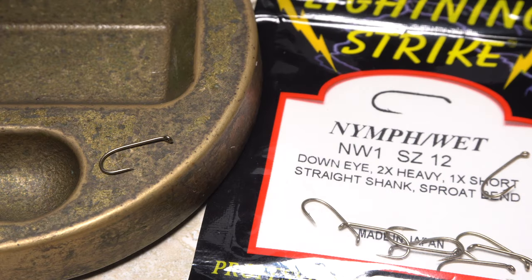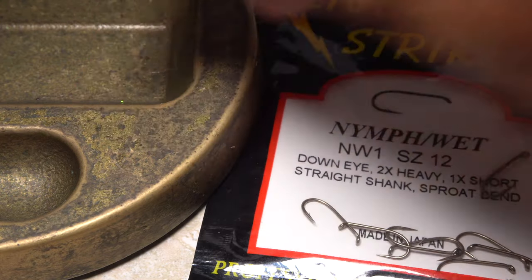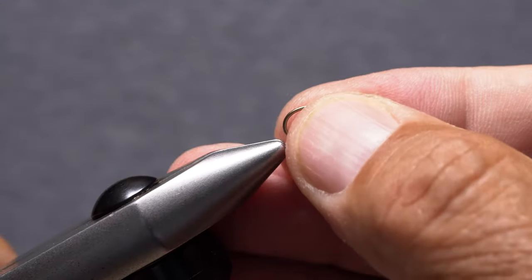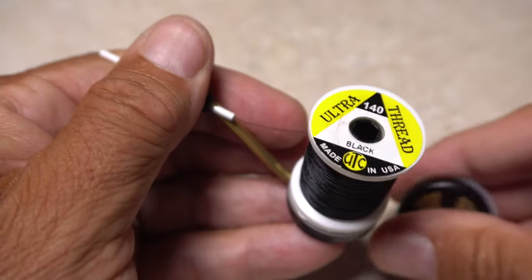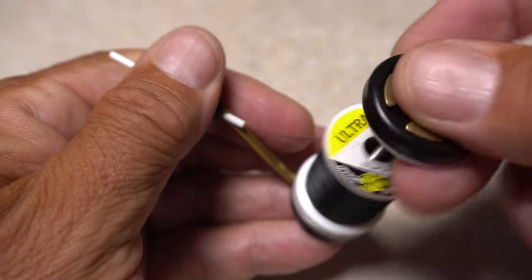The Turbo Beetle starts with a size 12 Lightning Strike NW1. After getting the hook firmly secured in the jaws of my tying vise, I load a bobbin with a spool of UTC 140 in black.